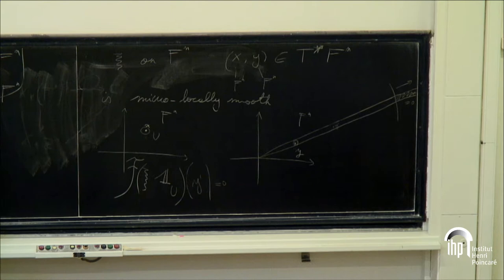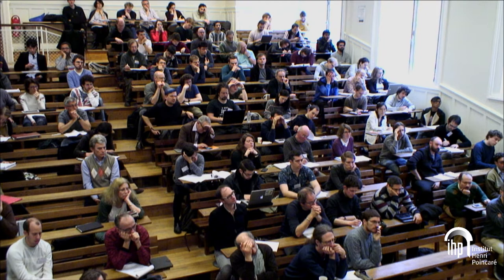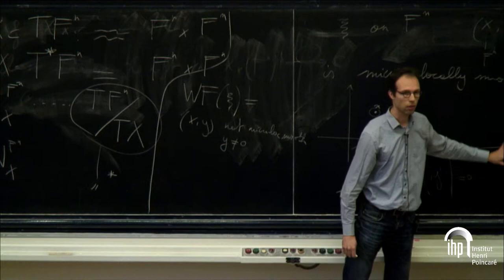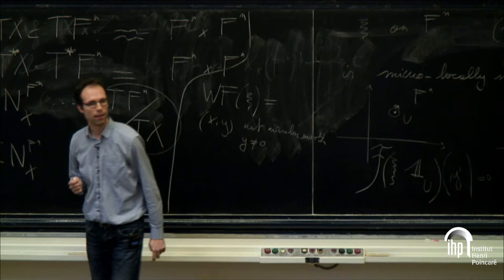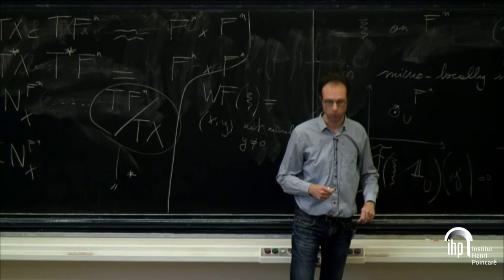So the wave front set WF(ξ) equals those tuples (x, y) which are not micro-locally smooth. The projection of the wave front set is always equal to the singular support of ξ — that's how the wave front set refines the singular support. For a general distribution, any closed conic set (closed under F*-multiples in the y variable) can be the wave front set. The question then is: if ξ is of C^exp class, what is the micro-locally smooth locus of ξ?